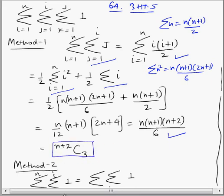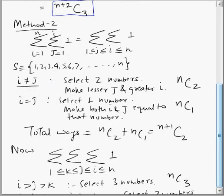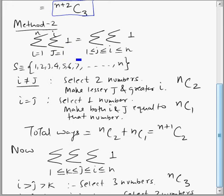Now we will look at Method 2, which is a little harder to understand, so let's give it a try. To explain Method 2, we first consider a double sigma of 1, where j varies from 1 to i and i varies from 1 to n. After understanding this double sigma concept, we will extend it to triple sigma.